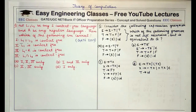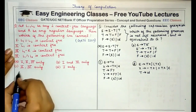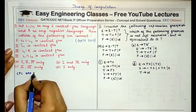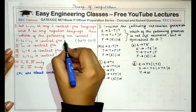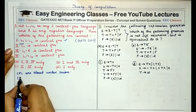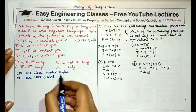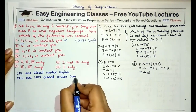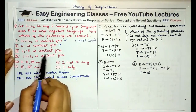The third question: let L1 and L2 be two context-free languages and R be any regular language. We have to find which statements are correct. The first statement says L1 union L2 is context-free — this is correct because context-free languages are closed under union. The second statement says L1 complement is context-free — this is not correct because context-free languages are not closed under complementation.